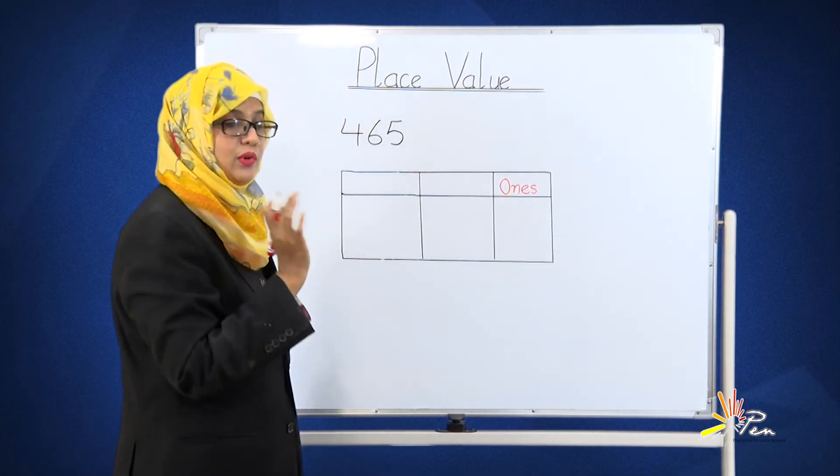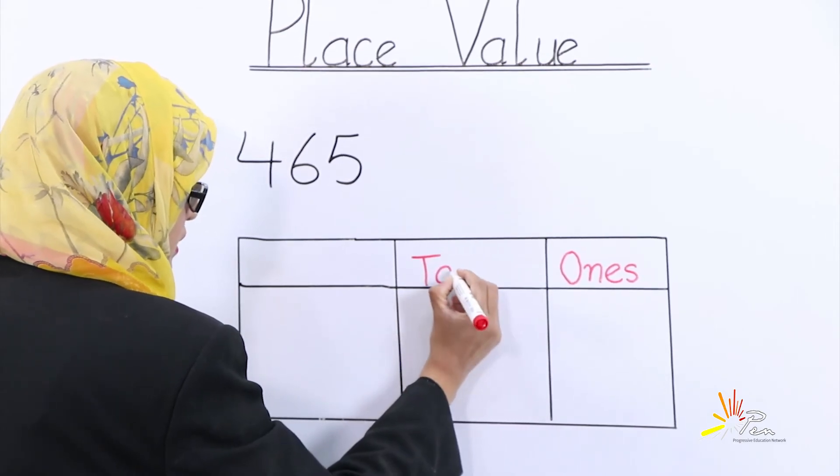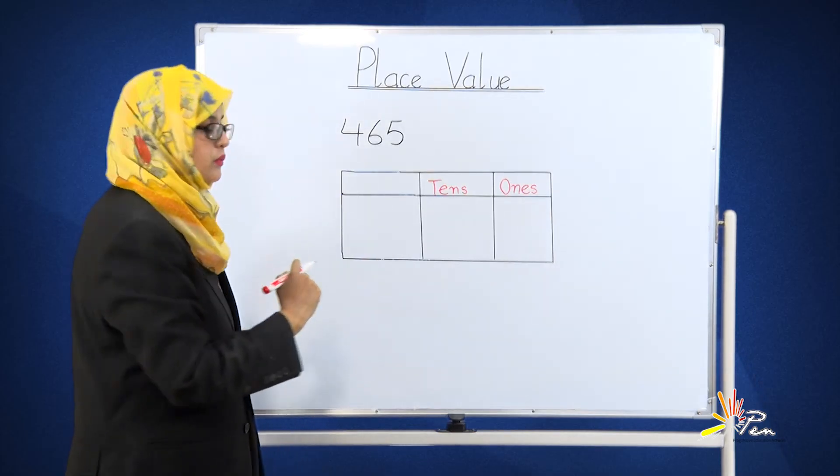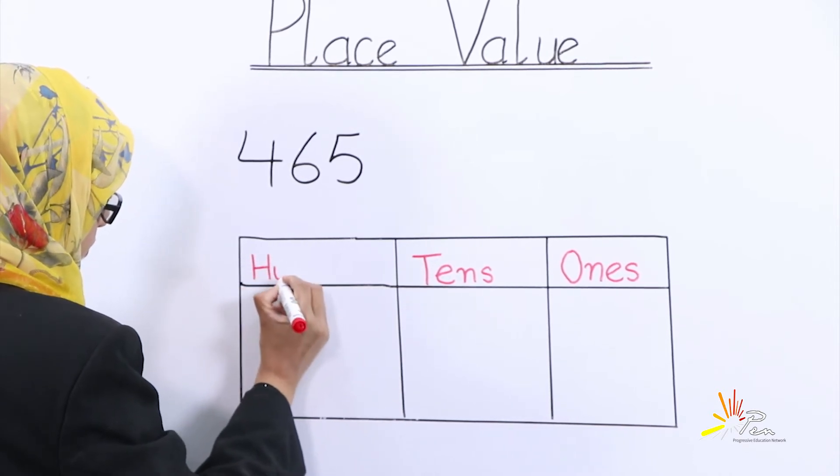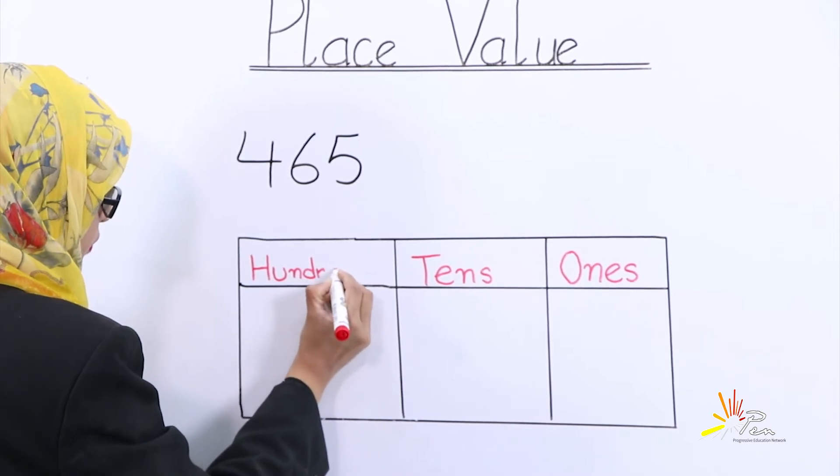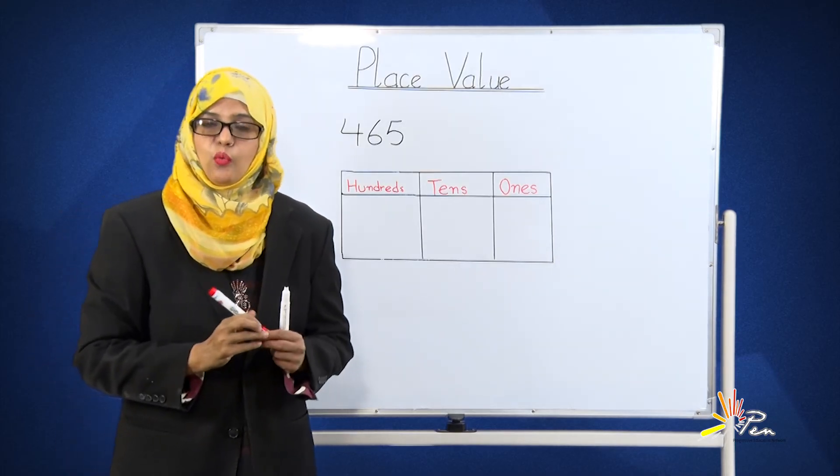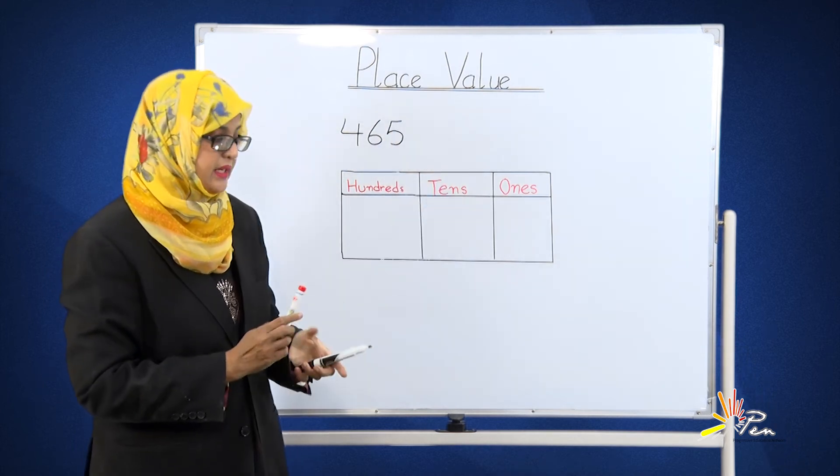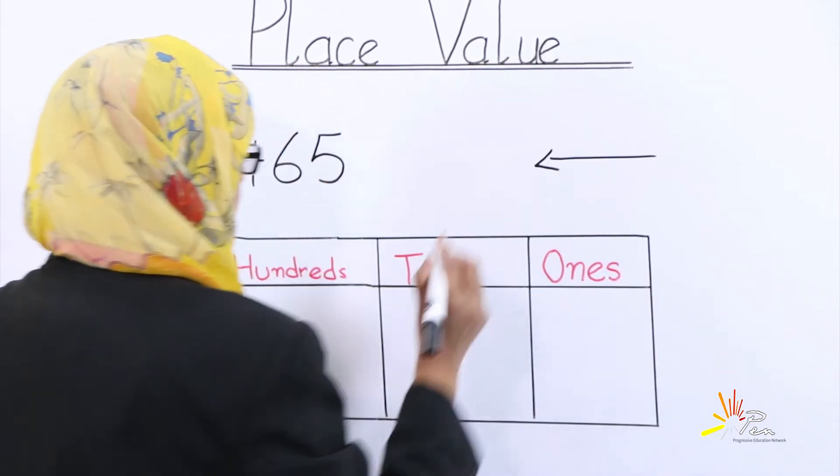You are right. Here we will write ones. It is the home of ones. Second, tens. And the third one will be called hundreds. Students, what I told you is that we will start from the very first number of the right hand. Yes, the first number is five.